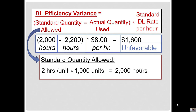You may ask why we use the standard direct labor rate here. The reason is we want this variance to be solely due to efficiency, not partially due to the rate. If we multiplied the 200-hour difference by $7.80, the variance would be a mix of rate and efficiency. Using the standard rate ensures that this variance is isolated solely due to efficiency.